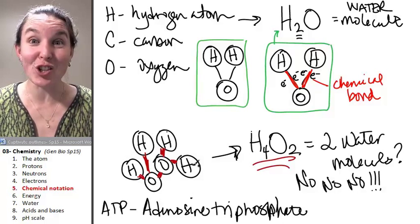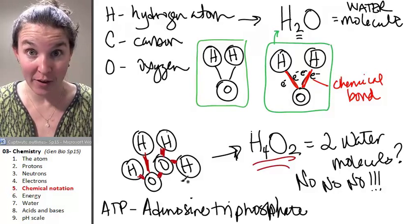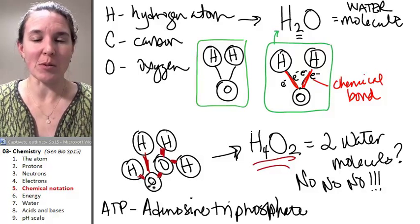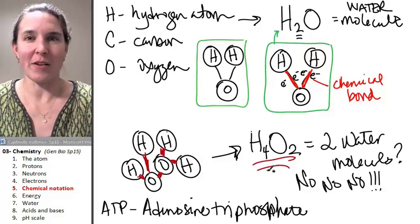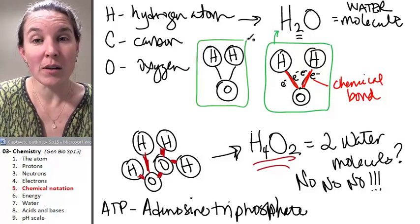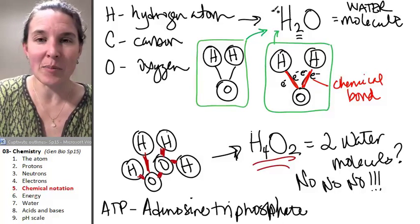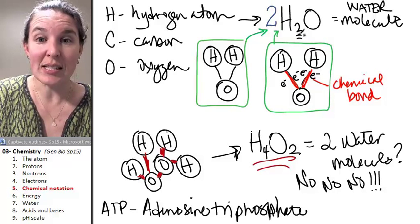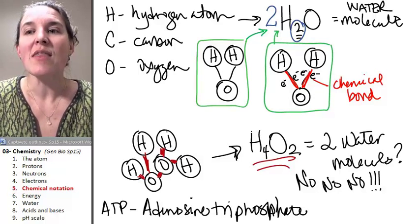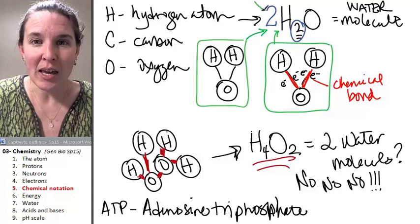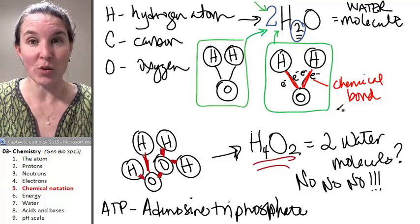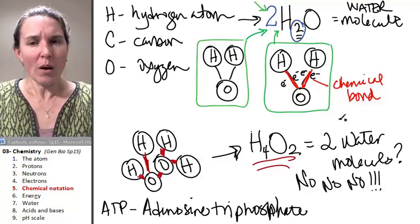There are all sorts of rules that you'll learn in chemistry for how to put atoms together. You could totally figure out what we would have to do in order to make that possible. But if we want to say we have two water molecules, that's where we put in something called a coefficient. This is a subscript. The subscript tells me how many atoms are in the molecule. The coefficient tells me how many molecules we have. So in this case, we have two molecules of water.